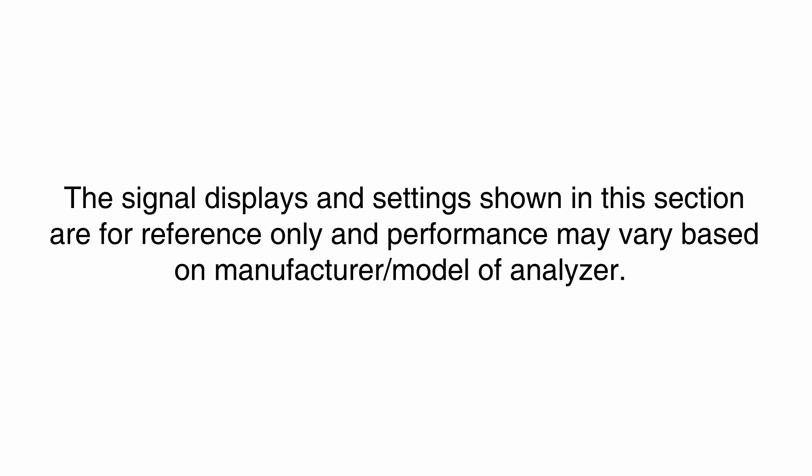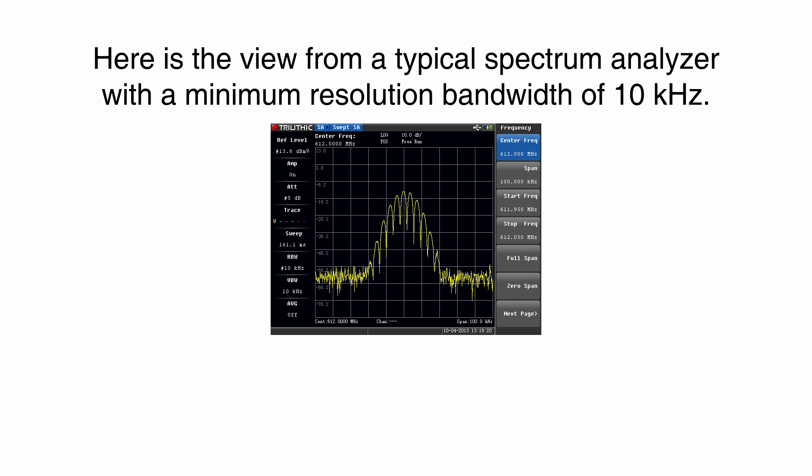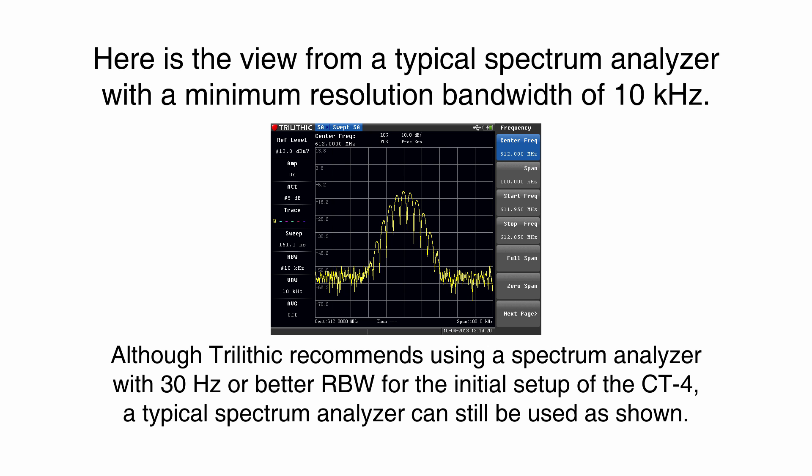The signal displays and settings shown in this section are for reference only and performance may vary based on manufacturer or model of analyzer. The screens shown represent the view of a typical spectrum analyzer with a minimum resolution bandwidth of 10 kHz. Trilithic recommends the use of a spectrum analyzer with a minimum resolution bandwidth of 30 Hz for the initial setup of the CT4; however, a typical spectrum analyzer can be used for the setup as shown.